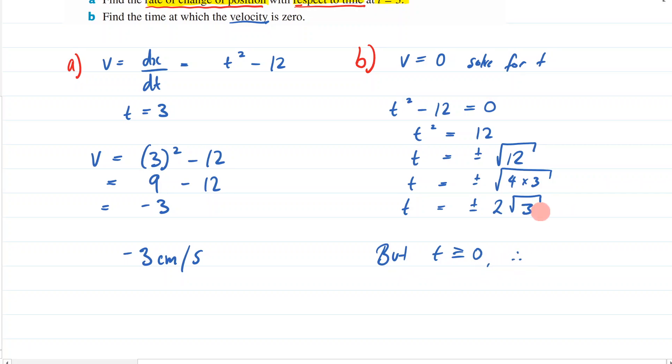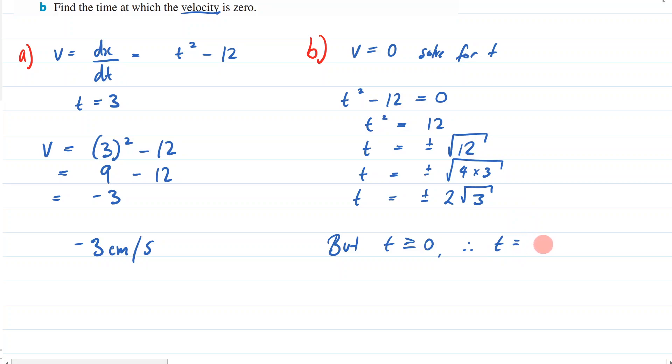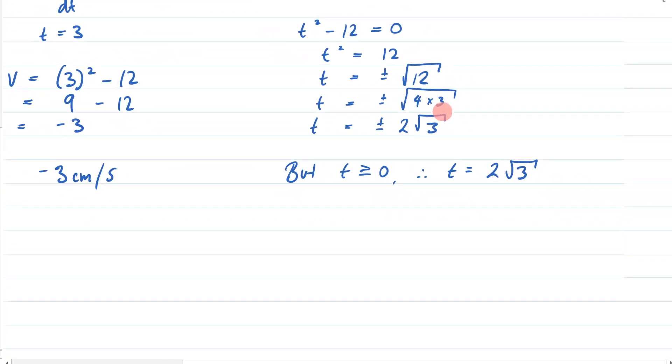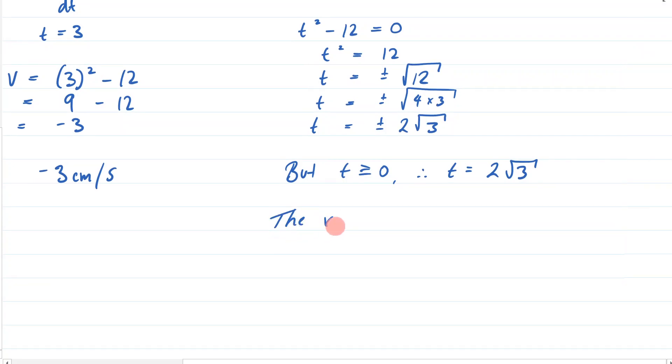Therefore, t is equal to just the positive one. And let's put a little statement to say what this means. So what this means is the velocity is zero at time t equals 2 square root of 3 seconds. So it's instantaneously at rest at that moment.